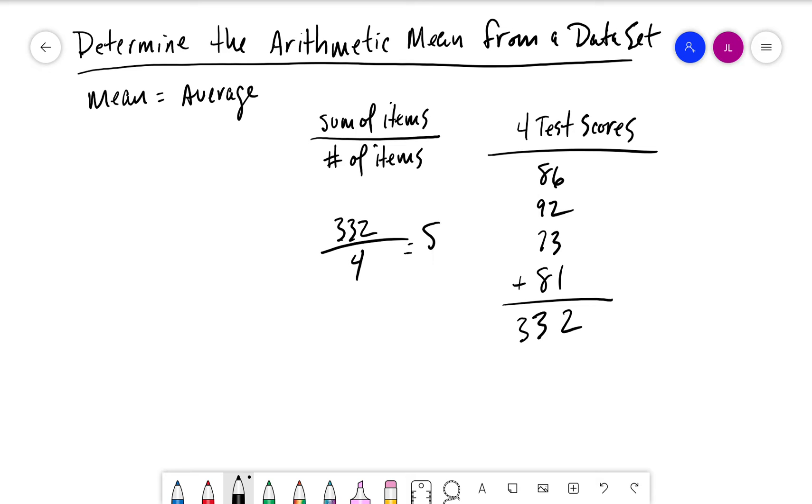So we'd have 332 over 4 is equal to 83, so 83 would be our average score here.